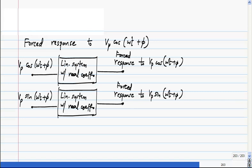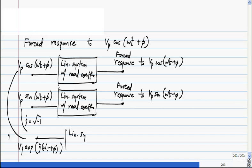...is to superpose these two inputs, multiplying this by one and this by j which is square root of minus one. And when we do that, my input becomes Vp exponential j(ωt + φ). And it of course goes into the same linear system with real coefficients.